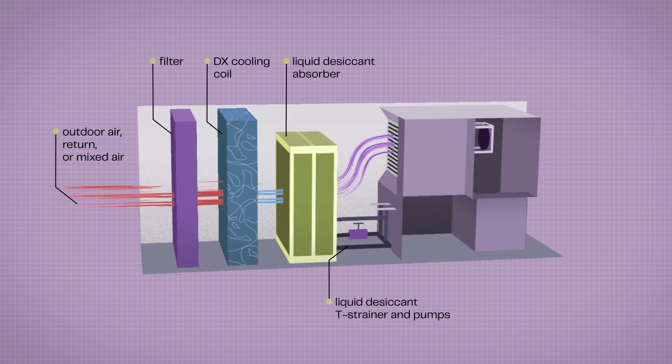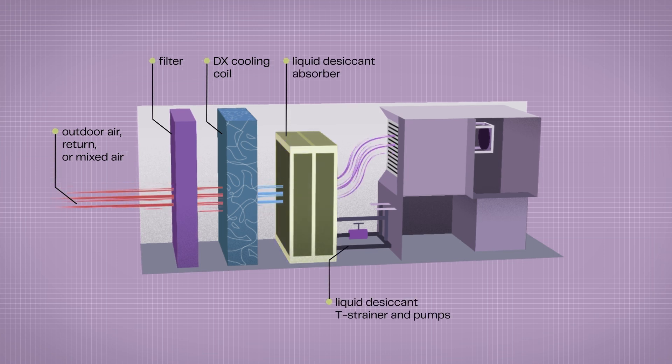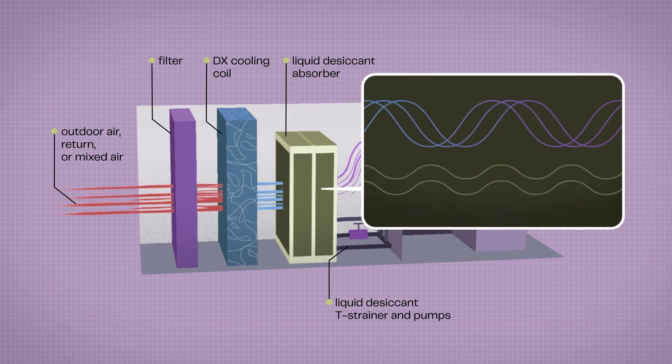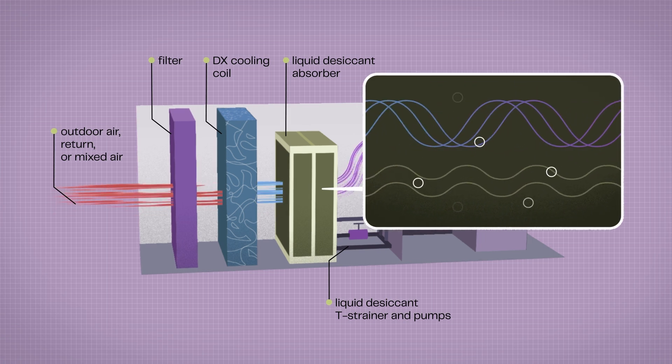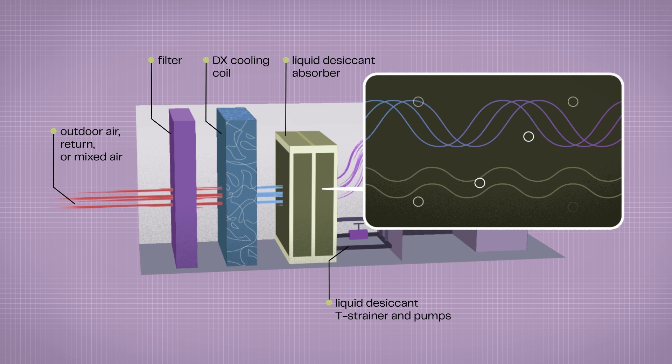The air then passes through the absorber, where it comes in contact with our liquid desiccant solution. This saltwater brine naturally absorbs water vapor directly from the air, dehumidifying it.